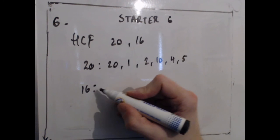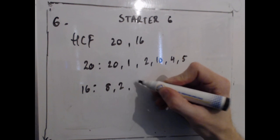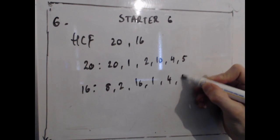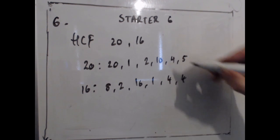Are there any more? No, there aren't. So 16 is going to be 8 and 2, 16 and 1 and 4 and 4, and the biggest number that appears in both of those lists is 4.